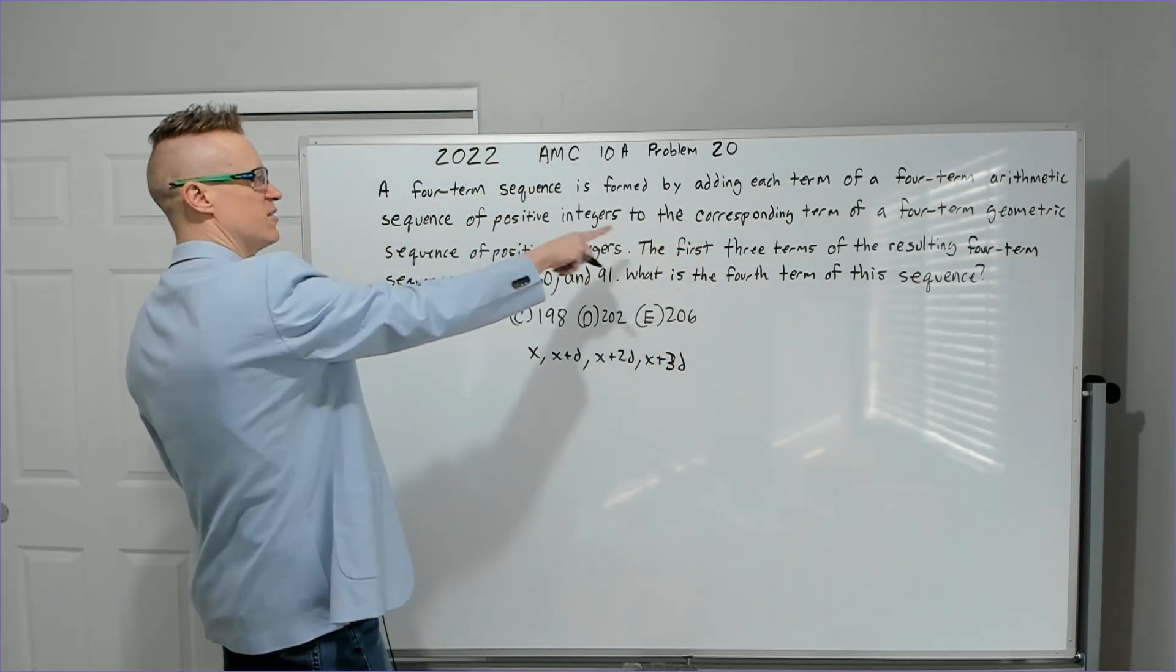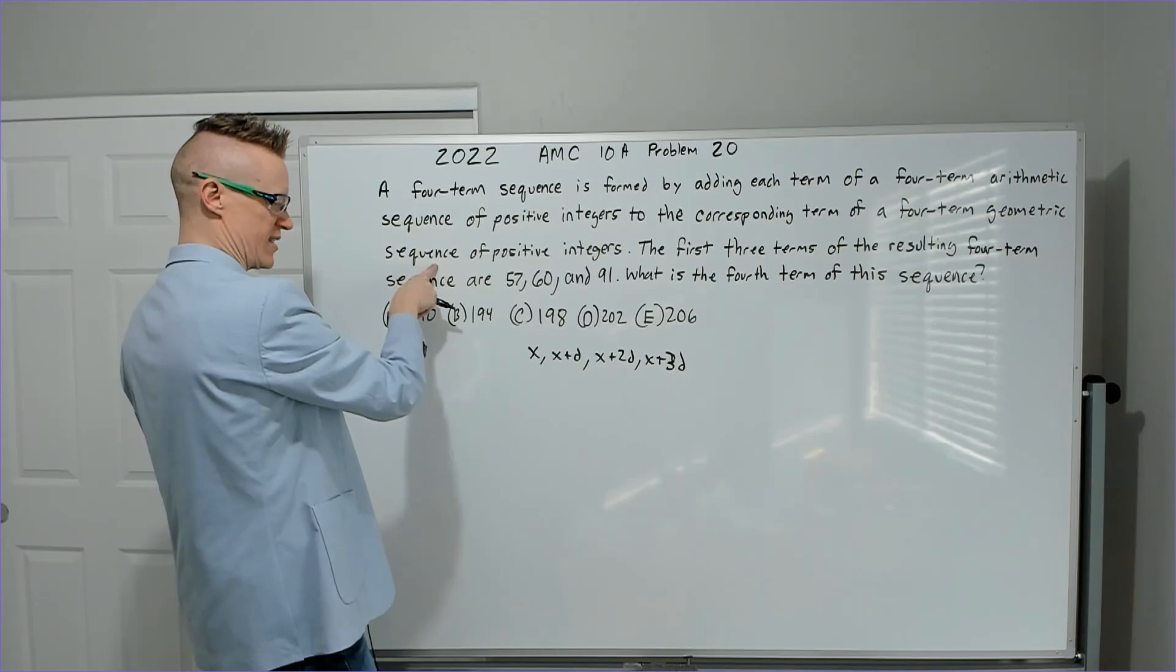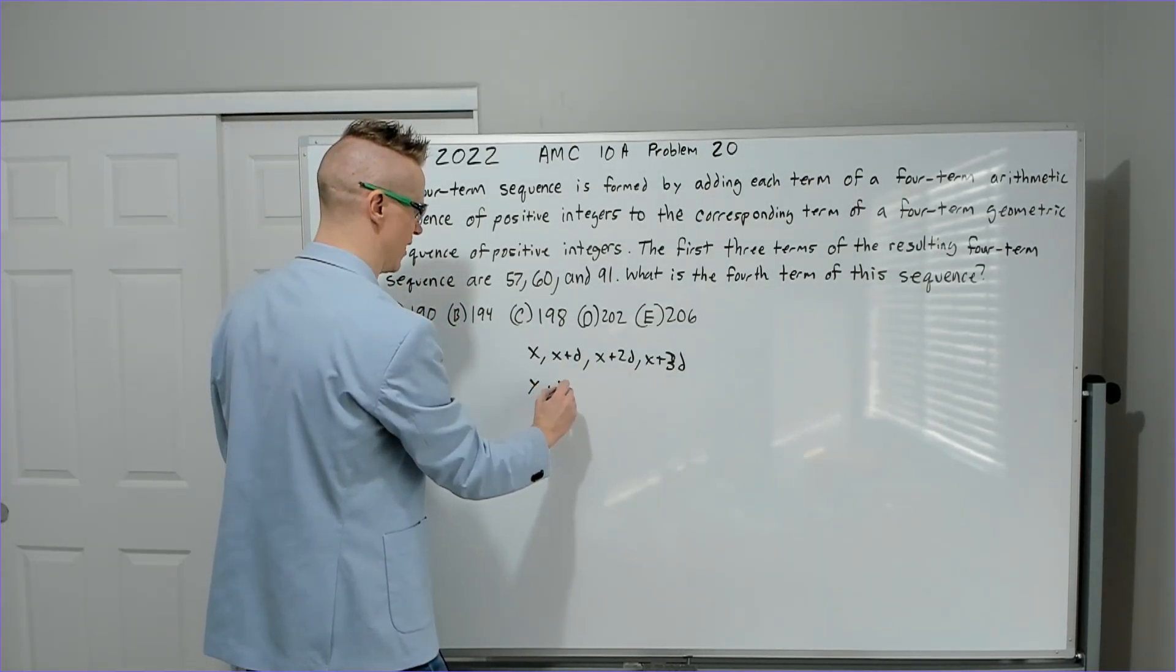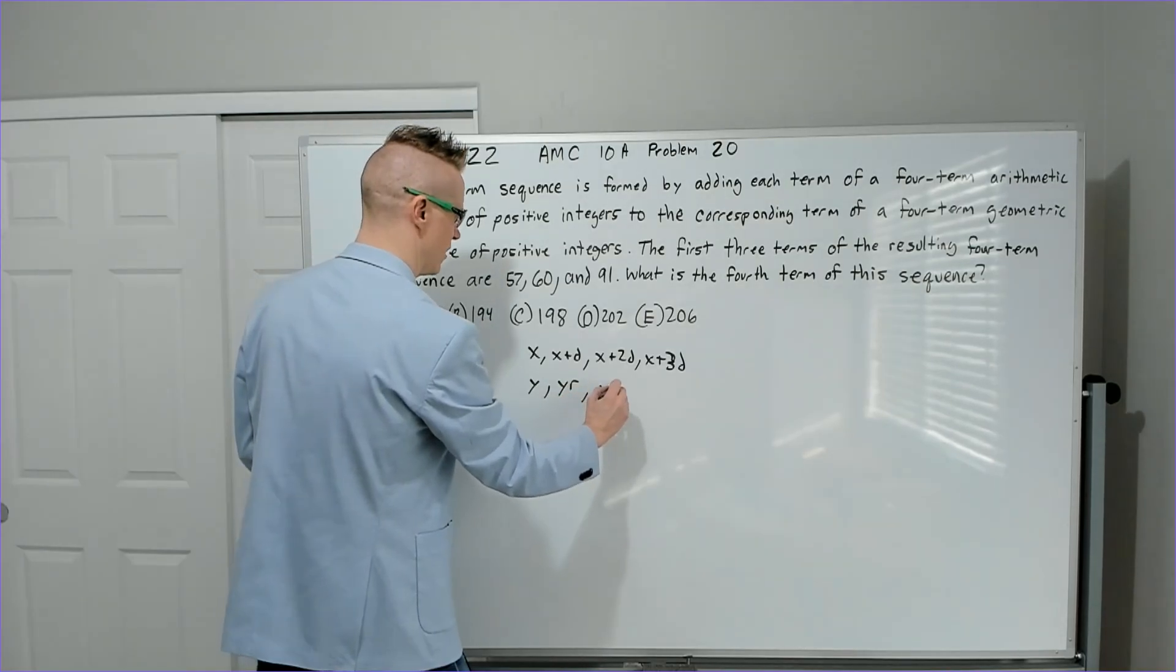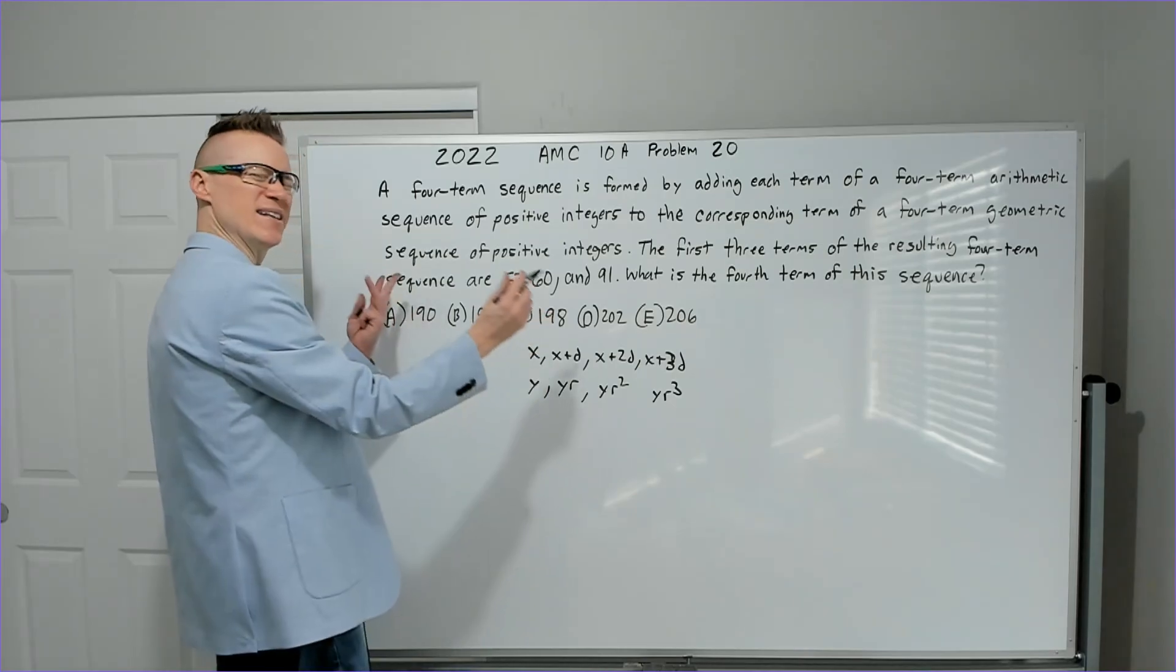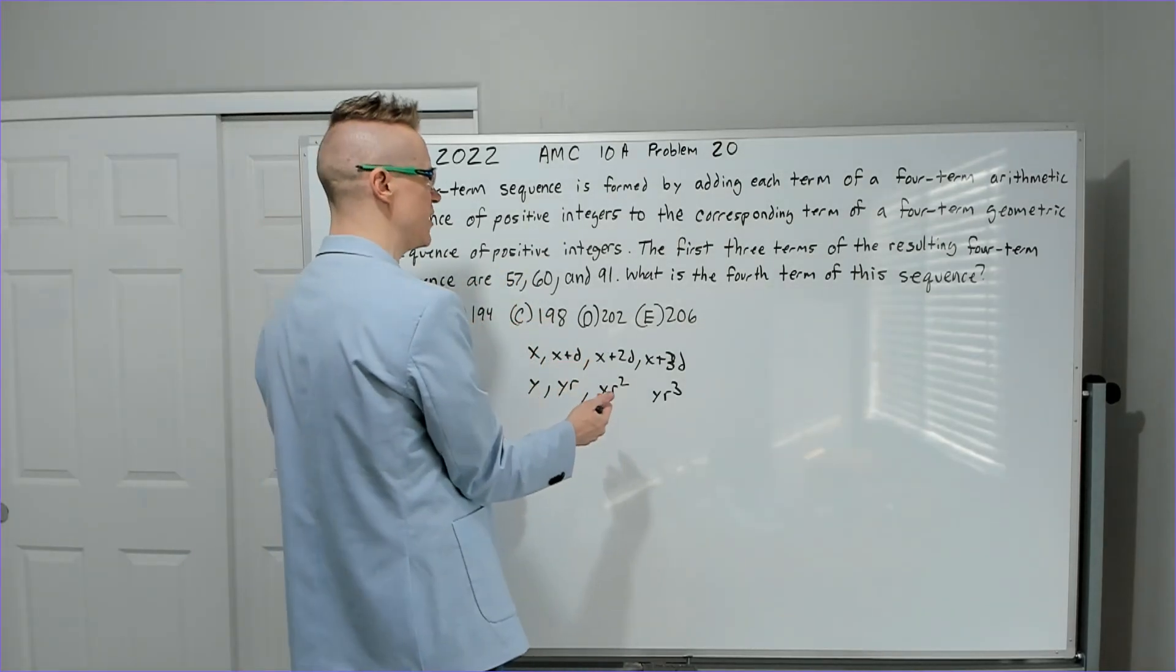To the corresponding term of a four-term geometric sequence of positive integers. So we'll line these up. We'll have Y, YR, YR squared, YR cubed. Just basic knowledge of those sequences.